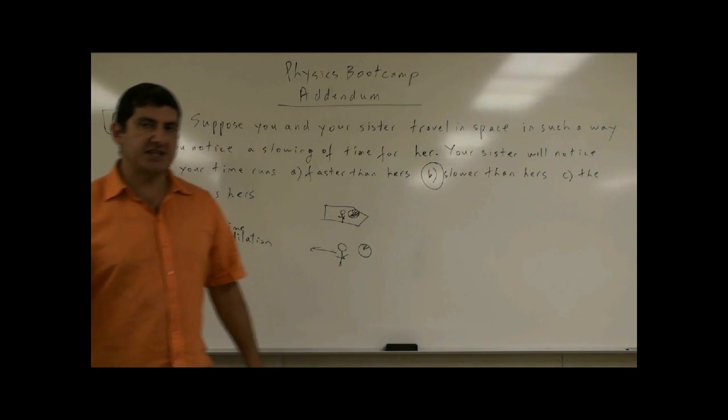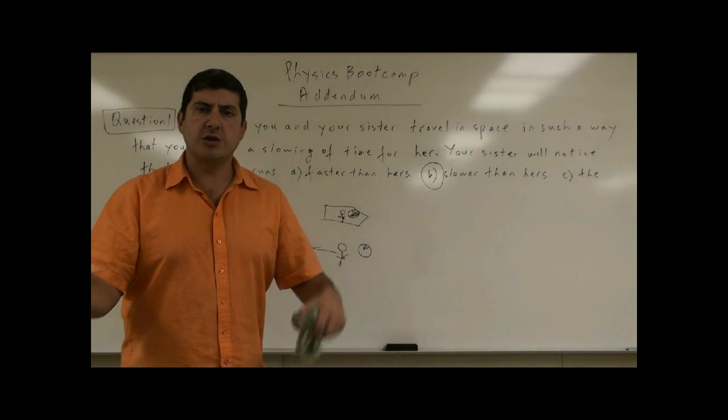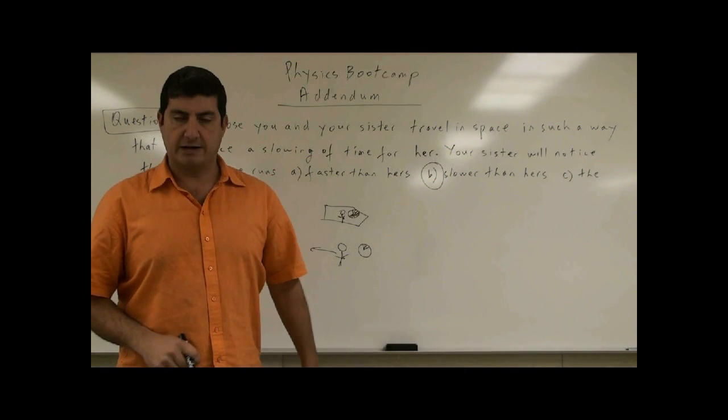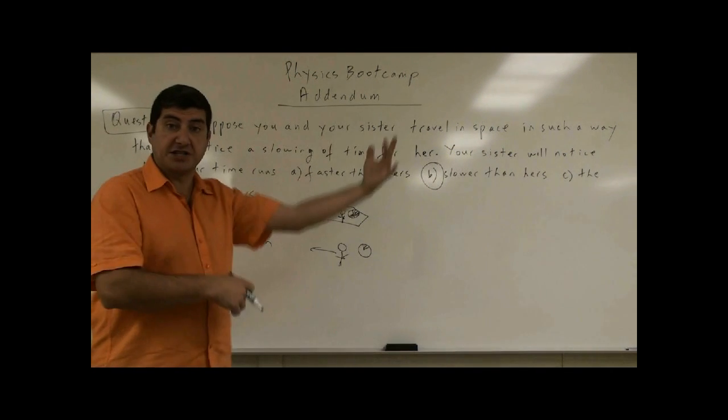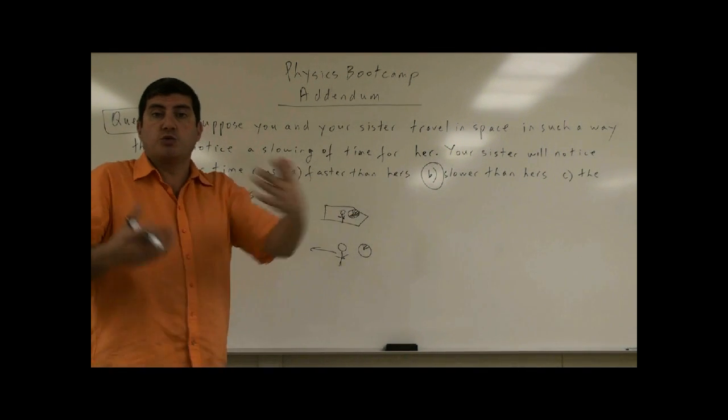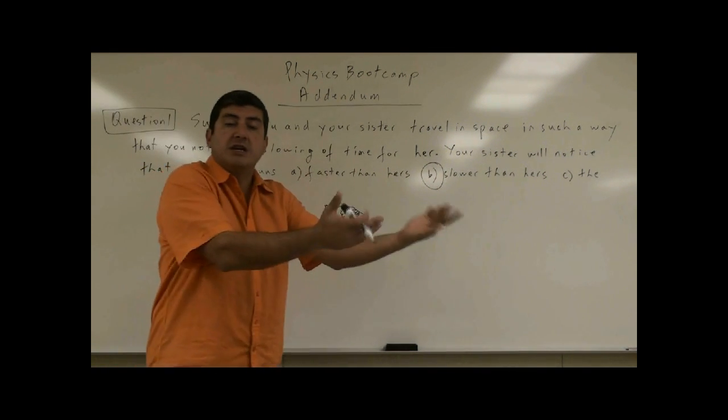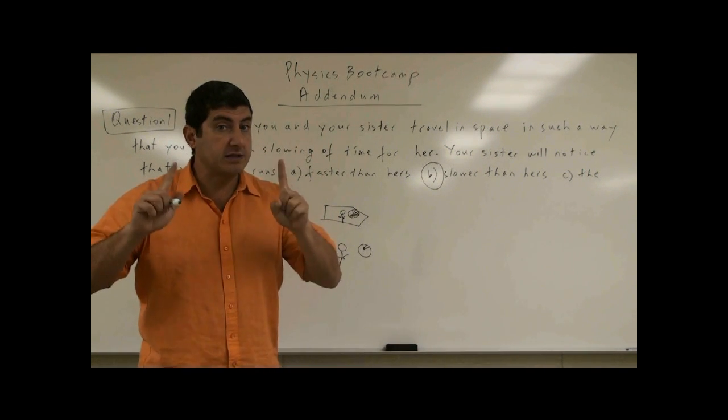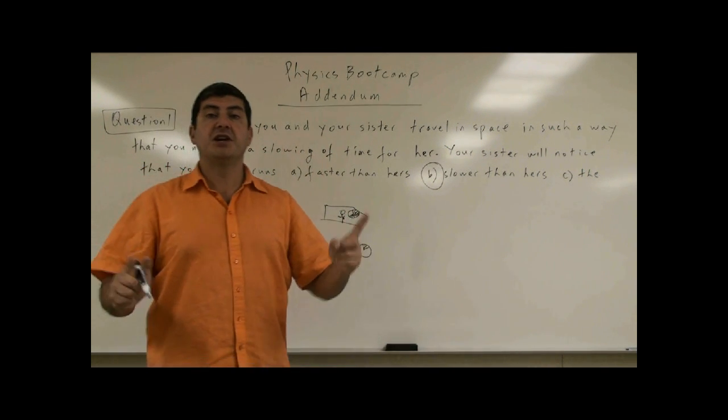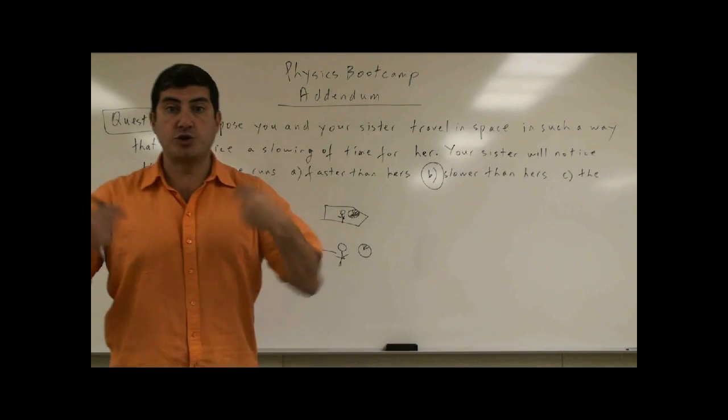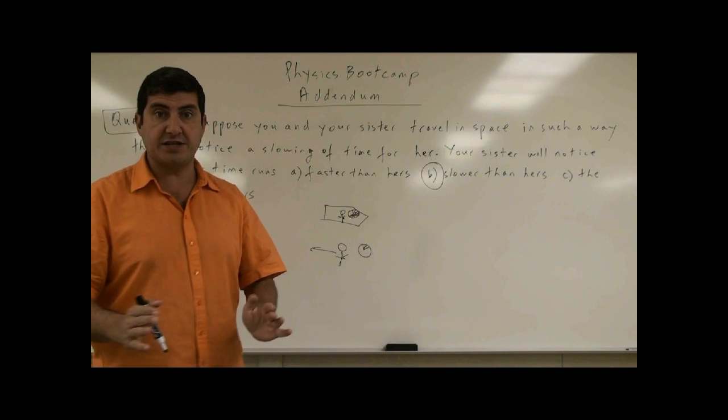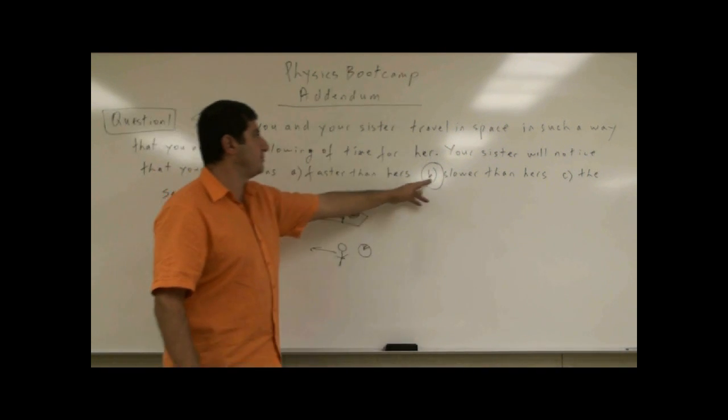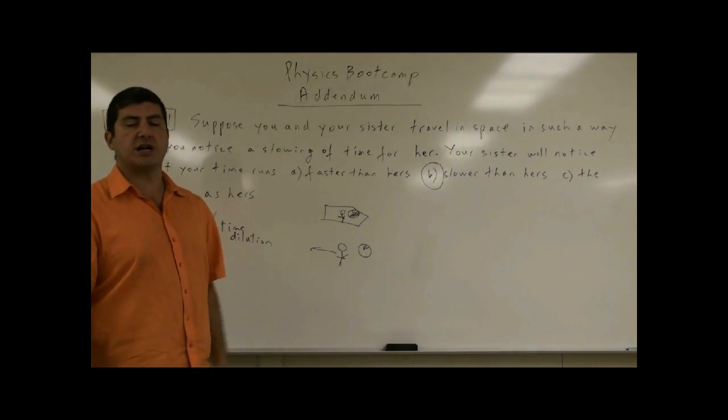Because otherwise, if she didn't see yours going slow, then you can determine who is the one moving. If you both agreed that hers is the one moving slower, then you would both come to the conclusion that she is the one that is moving. But the postulate one says, you can't determine whether you are the one moving if you are going at constant speeds. So the choice is B. She will also see your clock as running slow.